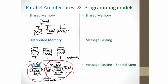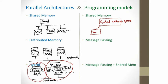Just as you have parallel architectures, there are different programming models to write code for these. In the shared memory model, the assumption is that there is one huge global address space — one global memory that is visible to all the processes or all the tasks. All the tasks get to see the same global address space, which means that if one task writes something to the global address space, that is visible to everybody else.